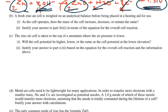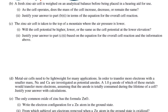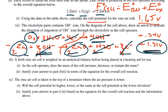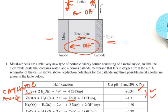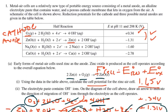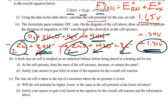For part B, a fresh zinc air cell is weighed on an analytical balance before being placed in a hearing aid for use. As the cell operates, does the mass of the cell increase, decrease, or remain the same? Then justify your answer in terms of the equations for the overall cell reaction. Well, the idea here is that the oxygen is actually coming from the outside. So because the oxygen is coming from the outside, then the mass of the battery, the cell, is actually going to increase as you go along. So we're going to say increase.